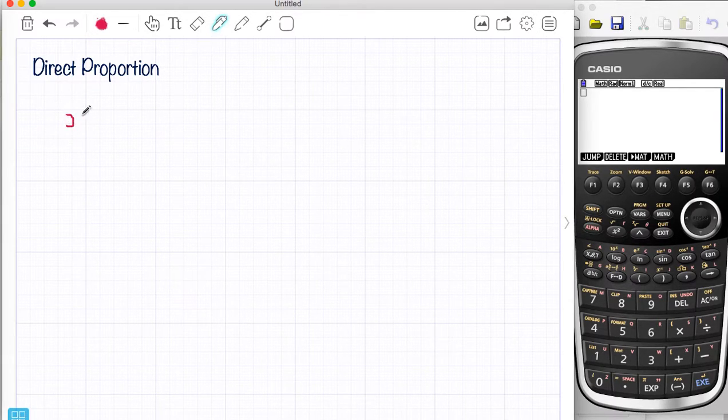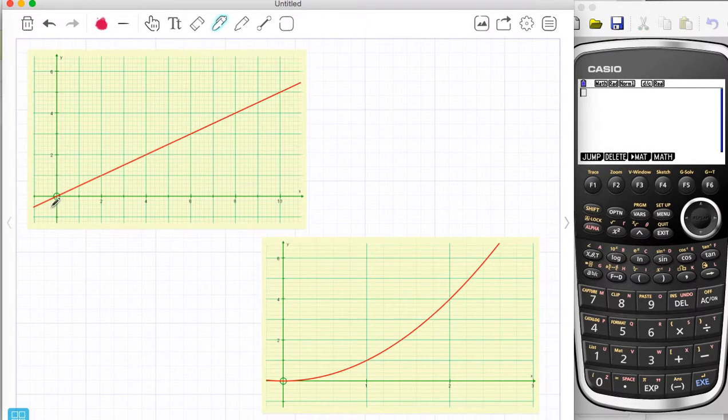For example, if X was one variable, if X increases then Y will also increase. So I've got two examples of that. The first one here is a straight line. See as X goes up, Y also goes up.